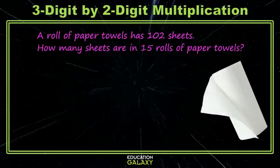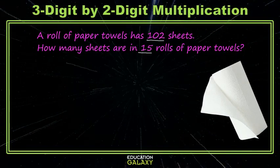Yay! Okay, here we have a roll of paper towels. It has 102 sheets, and we want to know the total number of sheets in 15 rolls. So this is multiplication. We have 102 times 15.